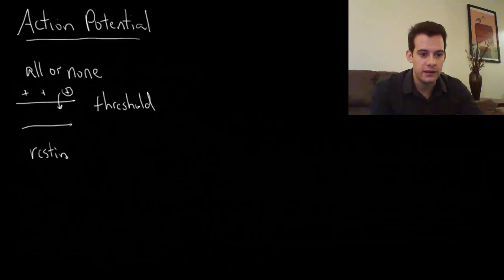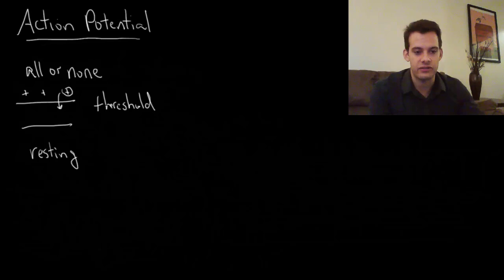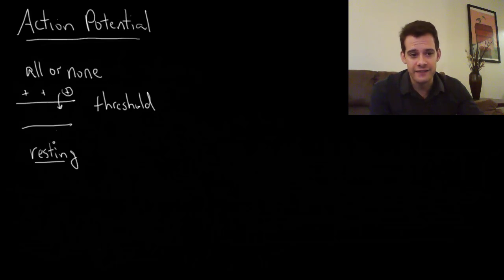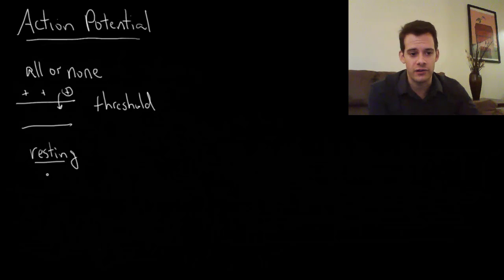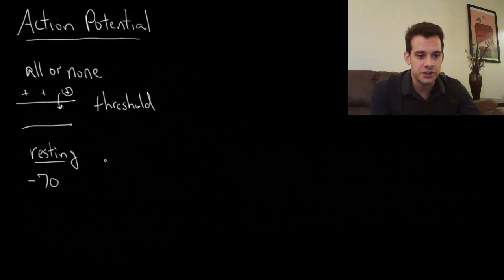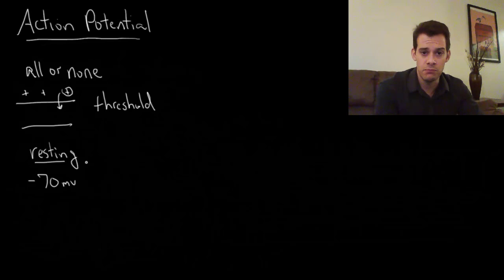Normally, if we look at a neuron, it's at what's called resting potential. This means that if we look at the balance of positive and negative ions inside and outside of the neuron, the neuron has a charge of minus 70 millivolts.